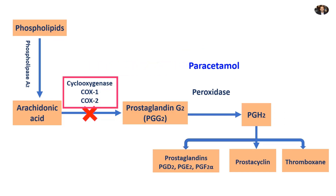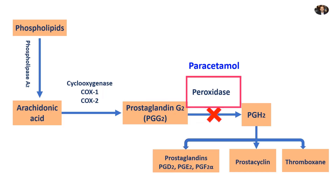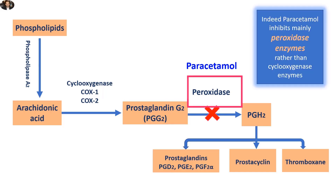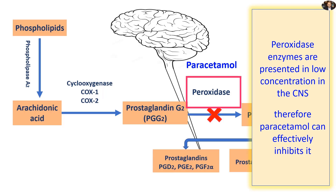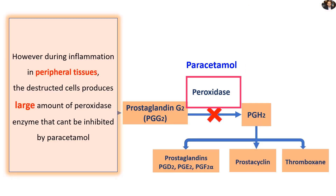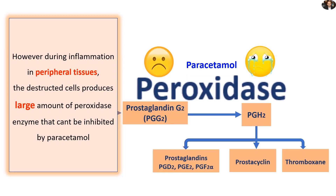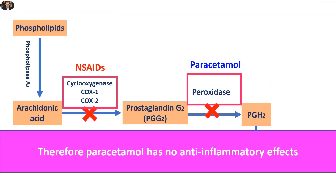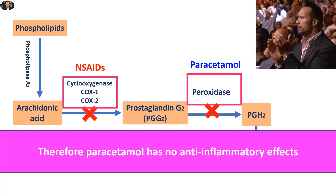This question had irritated scientists for decades, until finally they approached the answer. It has been discovered that paracetamol inhibits mainly peroxidase enzyme rather than cyclooxygenase enzyme. Peroxidase enzymes are present in low concentrations in the CNS; therefore, paracetamol can effectively inhibit it. However, during inflammation in peripheral tissues, the destroyed cells produce large amounts of peroxidase enzymes that cannot be inhibited by paracetamol. Therefore, paracetamol has no anti-inflammatory effects. That makes sense now.